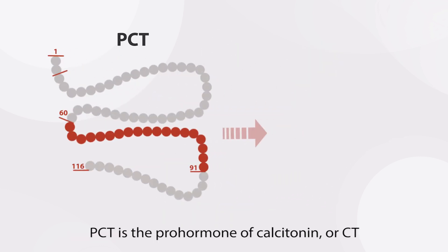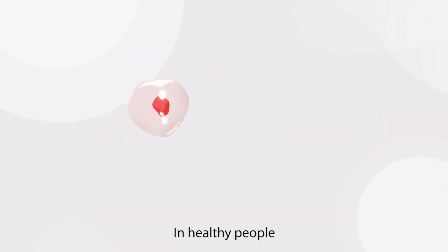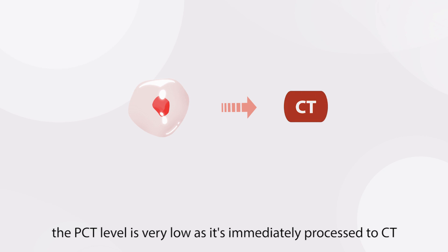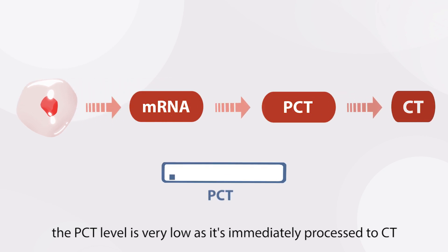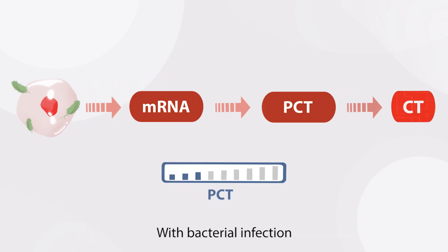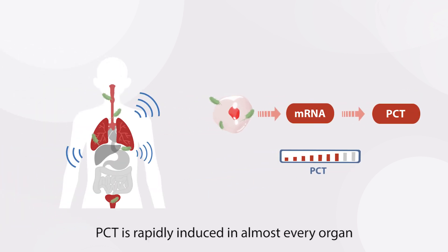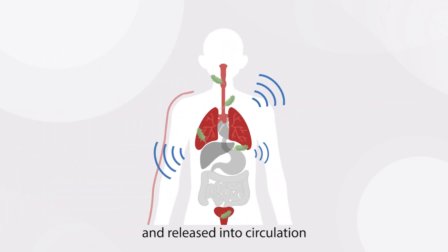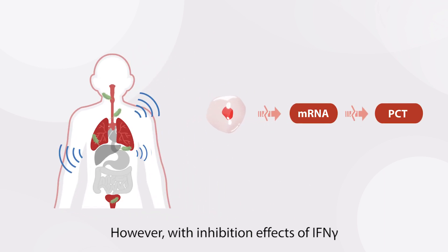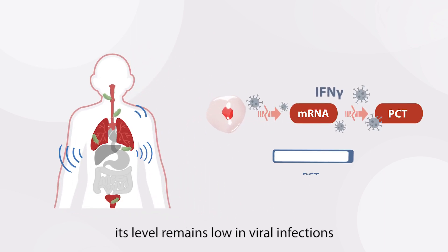PCT is the prohormone of calcitonin, or CT. In healthy people, the PCT level is very low as it is immediately processed to CT. With bacterial infection, PCT is rapidly induced in most every organ and released into circulation. However, with the inhibition effects of interferon gamma, its level remains low in viral infections.